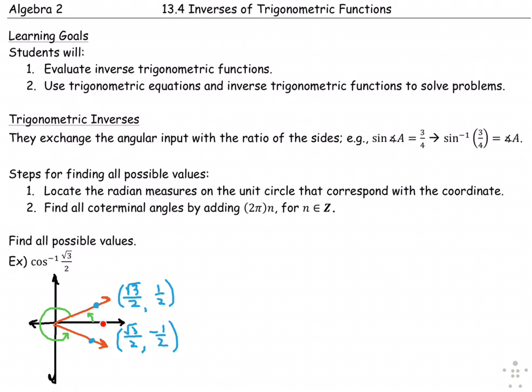This ordered pair occurs when the angle measure is π/6, plus any coterminal angles of full revolutions that would land you back on that same terminal side. And the radian measure for the other terminal side that also lands at a point with an x-coordinate of √3/2 is 11π/6, plus any coterminal angles for n in the set of integers.